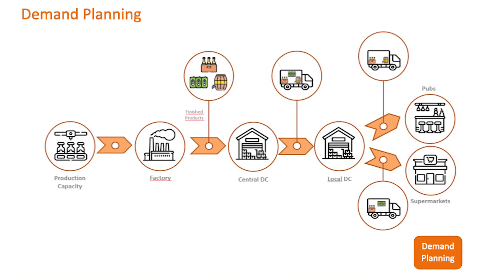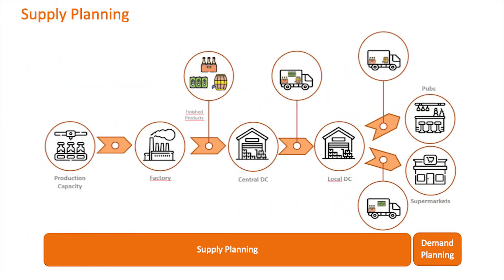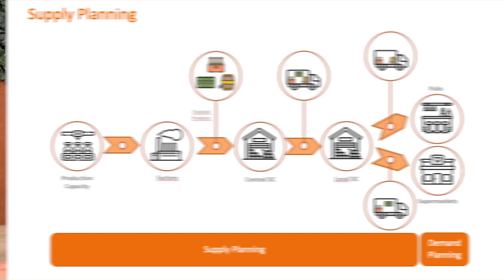Demand planning is used by companies to project future demand. The output of demand planning is a time-phased projection of future demand. It is then the task of supply planning to answer the what, the where, and the when question of what is needed to source, produce, and transport throughout the supply network in order to satisfy that demand.